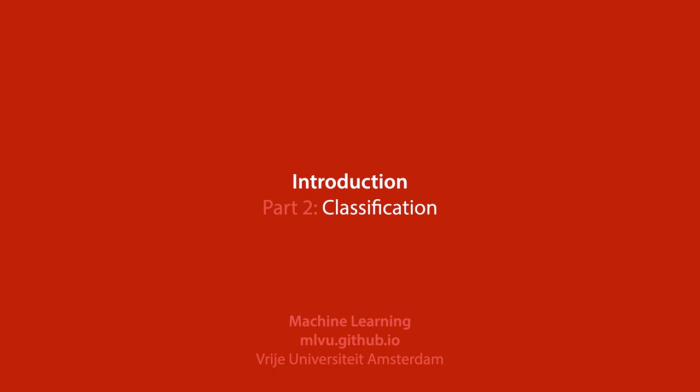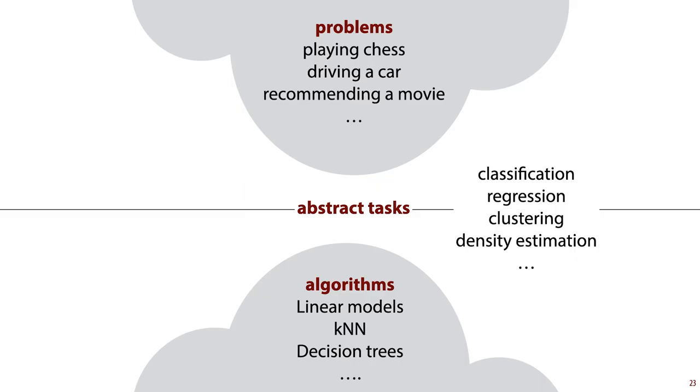In this video we'll look at our first abstract task, classification. In the last video we showed this diagram of how machine learning usually works. We have a problem, we translate part of that problem to an abstract task, and then we take an existing algorithm for that abstract task and implement it.